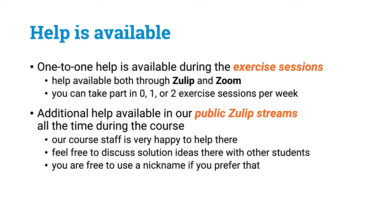If you need any assistance with your exercises or have any questions, there are basically two places where you can ask. One is our virtual exercise sessions that are held twice a week, where you have the possibility of having one-to-one discussions with our course staff. But the fastest way to get help is to simply ask in our public Zulip streams. We are very happy to answer your questions there, and it would be great if you can also share your experiences of what kinds of approaches work well. If you are uncomfortable asking questions in Zulip with your real name, please feel free to pick a random nickname.